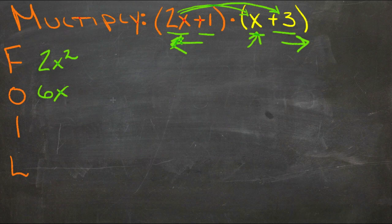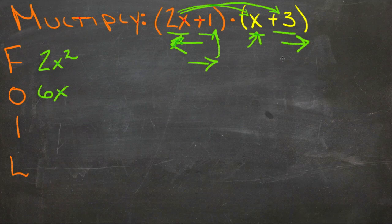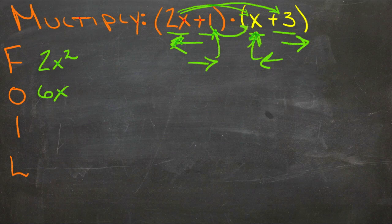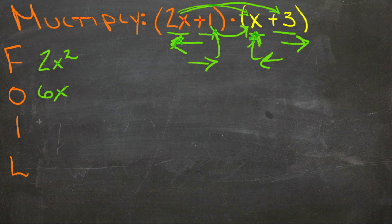Then we have I, which is the inside term. So now we have the inner term, which is that one, and the inner term, which is that one. So now we have 1 times x and that gives us x.